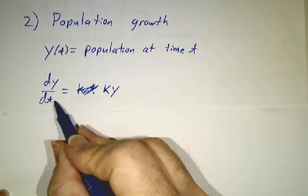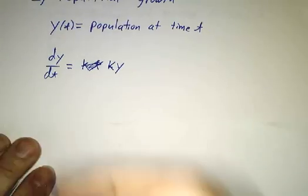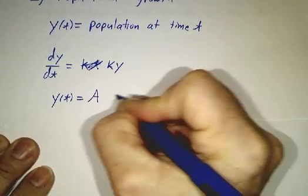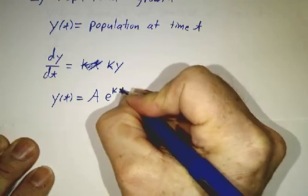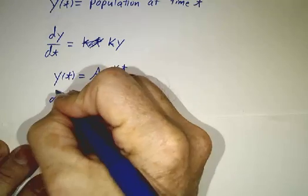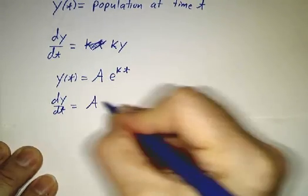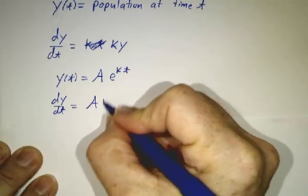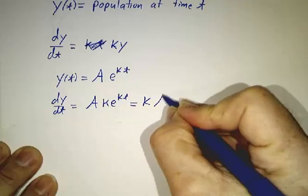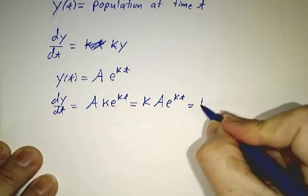Now, whenever you have this equation, I'll tell you what the solution is. The solution is an arbitrary constant times e to the kt. Let's check. What's the derivative of Ae to the kt? Well, the derivative of e to the kt is k e to the kt. So this is k times e to the kt, and that's k times y.